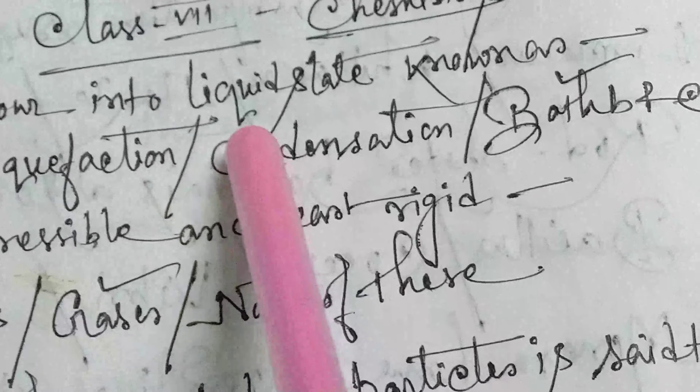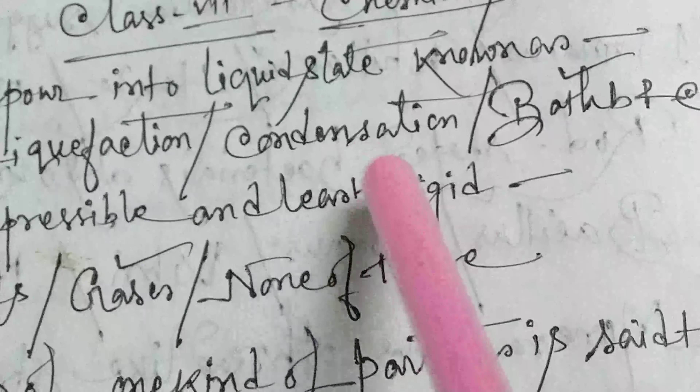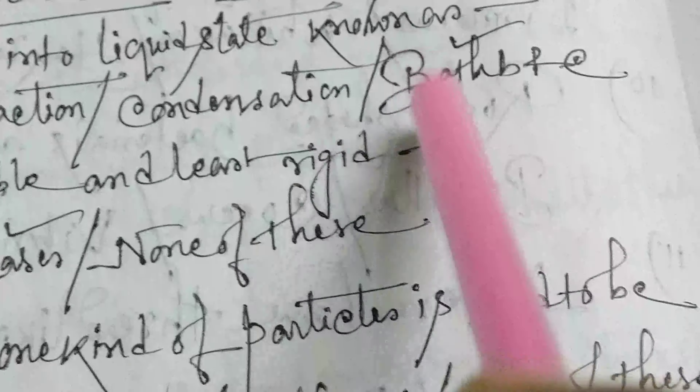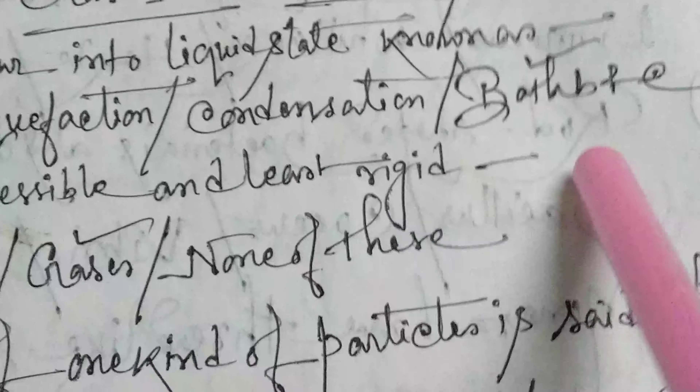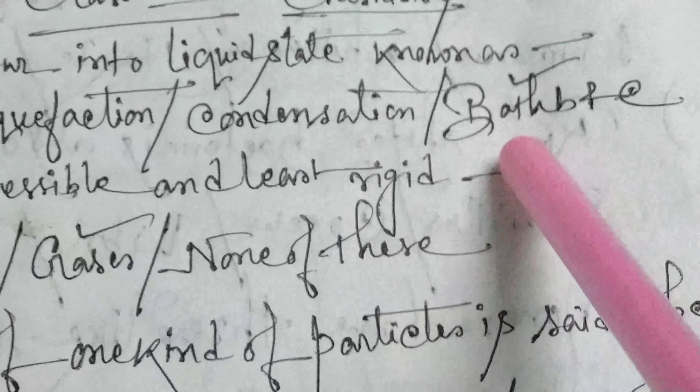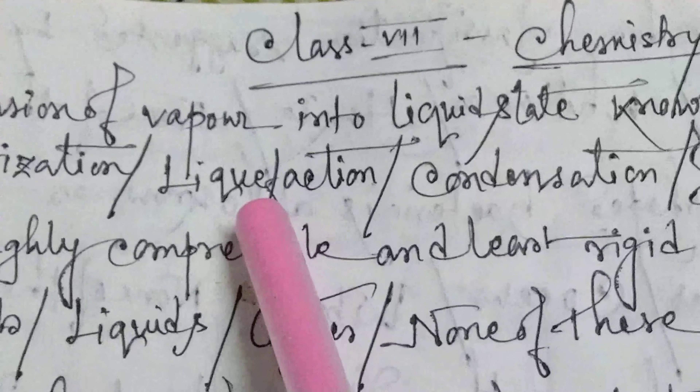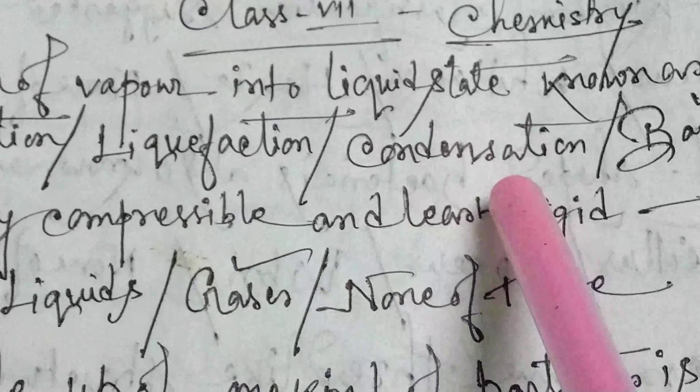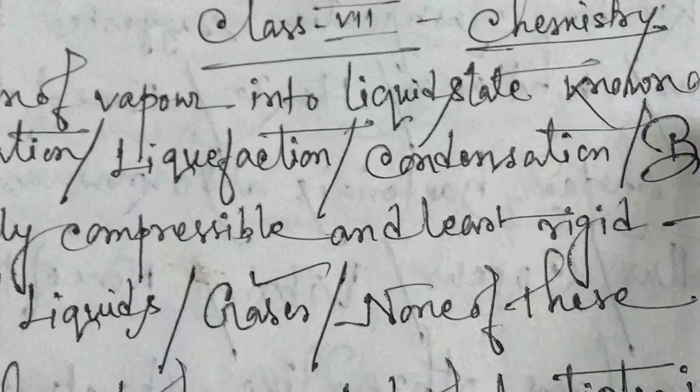Conversion of vapor into liquid state is known as: vaporization, liquefaction, condensation, or both B and C. The answer is both B and C, because liquefaction and condensation are the same — both mean vapor turning into liquid.